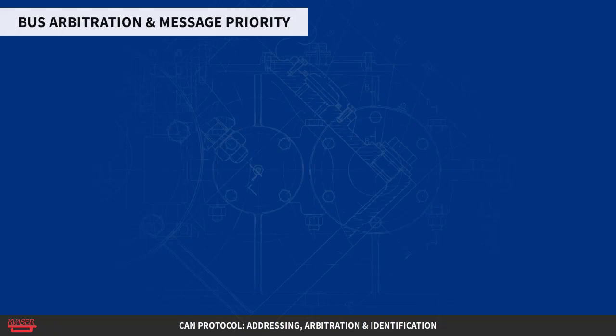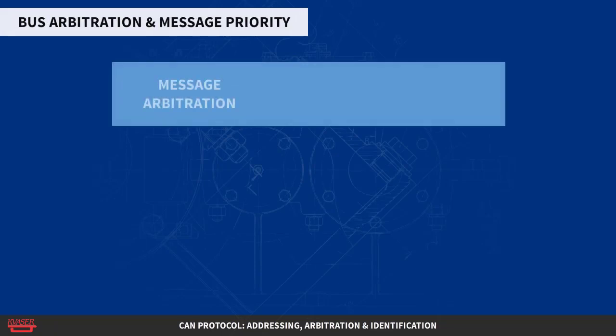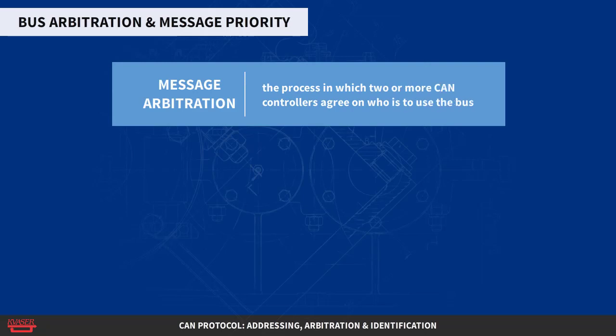Bus Arbitration and Message Priority. The message arbitration — the process in which two or more CAN controllers agree on who is to use the bus — is of great importance for the readily available bandwidth for data transmission.